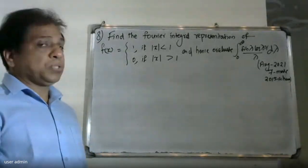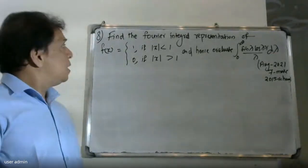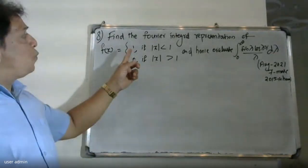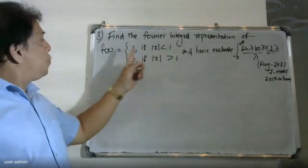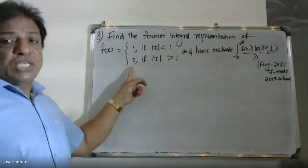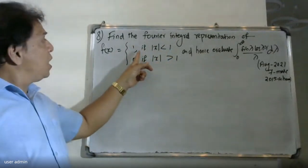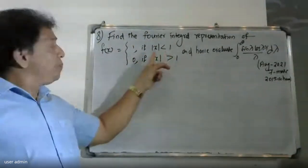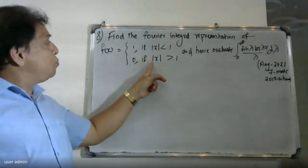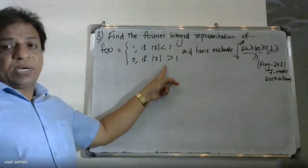Good morning students. The question is: find the Fourier integral representation of f(x), where f(x) is equal to 1 if |x| is less than 1, and zero if |x| is greater than 1.